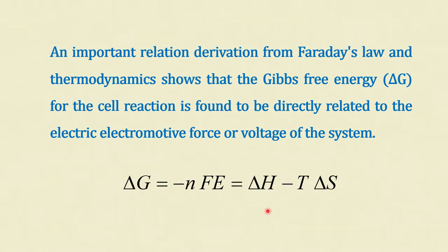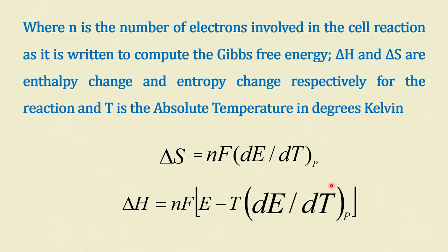An important relationship between Faraday's law and thermodynamics: the Gibbs free energy equation is ΔG = −nFE, which also equals ΔH − TΔS, where ΔG is the Gibbs free energy, n is the number of electrons, F is Faraday's constant, E is the voltage, ΔH is the enthalpy change, T is the absolute temperature, and ΔS is the entropy of the system. ΔS is given by nF(∂E/∂T) at constant pressure, and ΔH is given by nF[E − T(∂E/∂T)] at constant pressure.